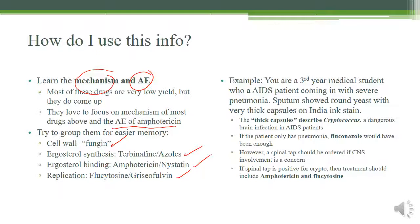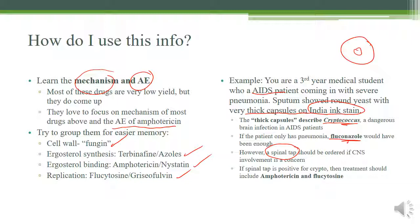Clinical case: as a third-year medical student caring for an AIDS patient with severe pneumonia, sputum shows round yeast with a thick capsule on India ink stain — classic for cryptococcus. If the patient only has pneumonia, fluconazole is sufficient to prevent CNS spread. However, perform a lumbar puncture to confirm CNS involvement. If crypto has spread to the CNS, switch to amphotericin plus flucytosine combination therapy. Thank you and good luck!